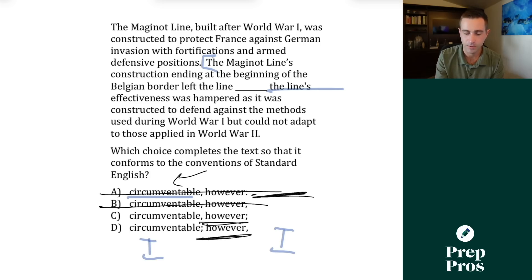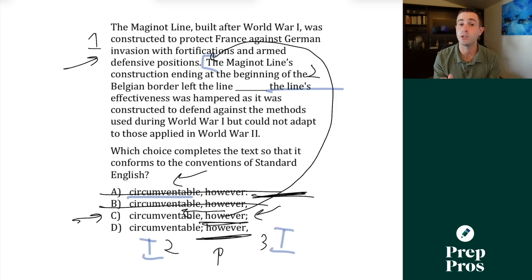Now from here, it becomes a context understanding. And the one I want you to always start with is answer choices that look like C. What this is essentially saying is the transition is working back to the left. It's showing the relationship between sentence one and sentence two. The Maginot line built after World War I was constructed to protect France against German invasion with fortifications and armed defensive positions. This essentially means we should be okay to pop the transition right at the front of this because it's showing that contrast between sentence one and sentence two. However, the Maginot's line construction ending the beginning of the Belgian border left the line circumventable. So it was supposed to be really good and able to protect France, but it was able to be circumvented. So here we are showing a contrast.